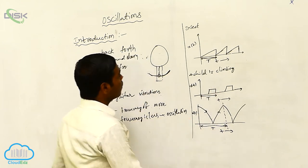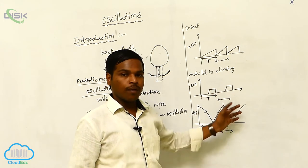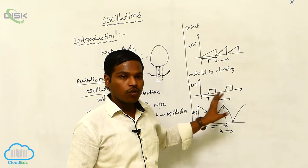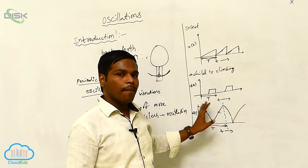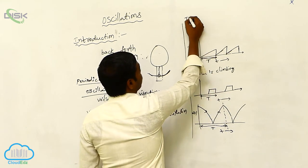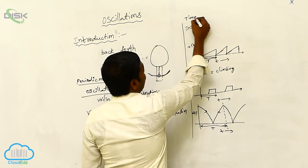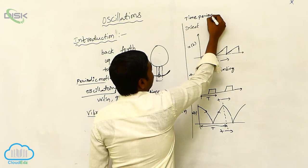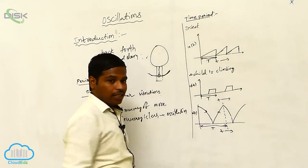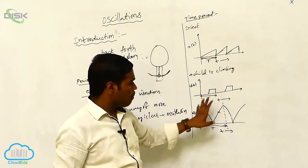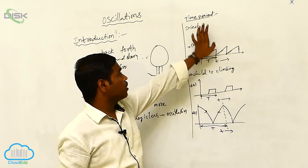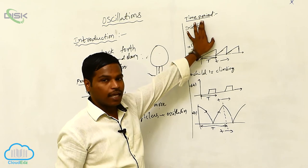The time taken to repeat this periodic motion is called the time period. The time period is the time taken by an object to complete one full repetition of its motion.